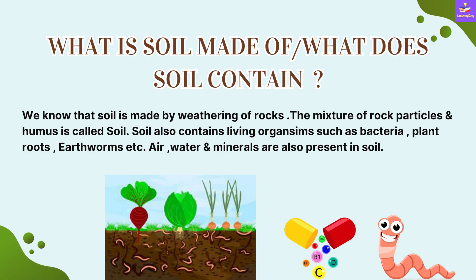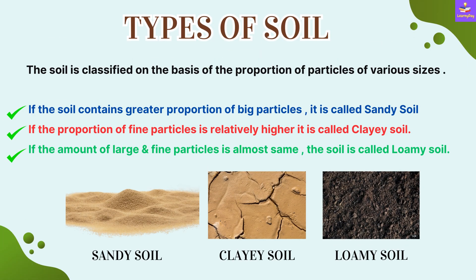Now, coming back to what soil is made of — we know that soil is made by weathering of rocks. So the mixture of rock particles and humus is called soil. Soil also contains living organisms such as bacteria, plant roots, and earthworms, and air, water and minerals are also present in the soil.